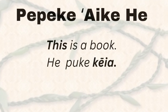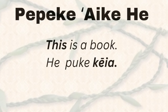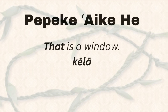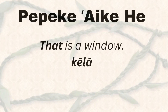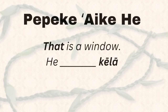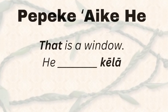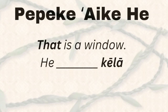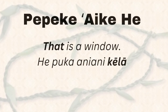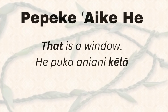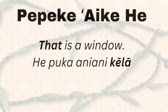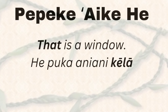Now I'm going to use something that is not in my immediate range so that I can say 'that is a window.' I already used keia for 'this,' so I'm going to use kela for 'that.' The word for window is puke aniani. So the complete sentence would be he puke aniani kela — that is a window.